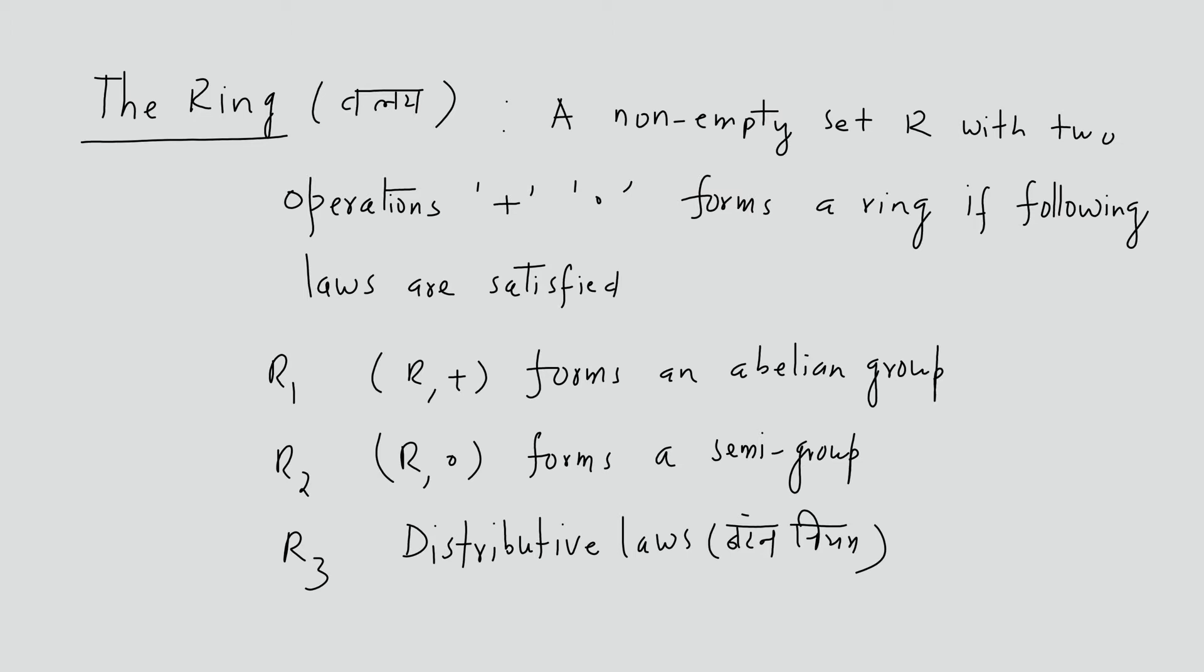R1 states that (R, +) forms an abelian group. To make an abelian group, we need closure, associativity, identity, inverse, and commutativity.